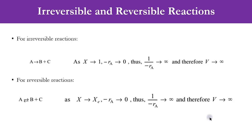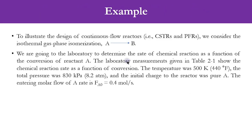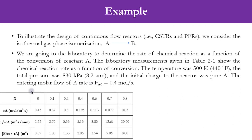Now moving on to today's example: to illustrate the design of continuous flow reactors such as CSTR and PFR, we consider an isothermal gas-phase isomerization in which A goes to B. We go to the laboratory to determine the rate of chemical reaction as a function of conversion of reactant A. The laboratory measurements are given in a table showing the chemical reaction rate as a function of conversion. The temperature was 500 Kelvin, the pressure was 830 kilopascal, the initial charge to the reactor was pure A, and the entering molar flow rate FA0 equals 0.4 mol per second.